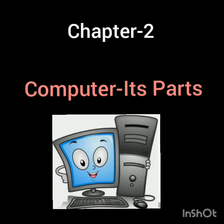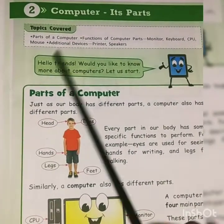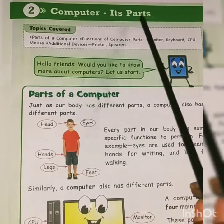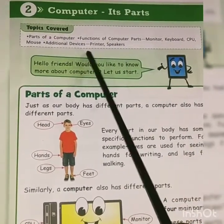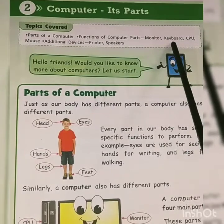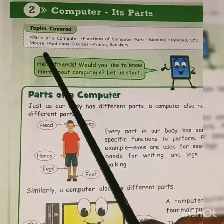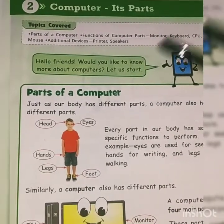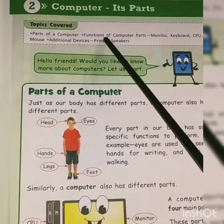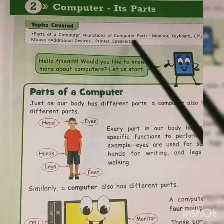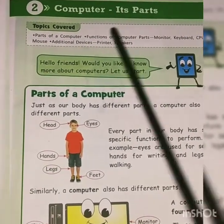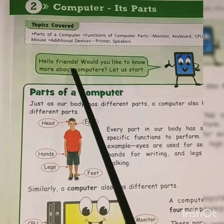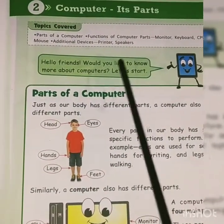Hello class, welcome to the e-learn session. Today we are going to read chapter number two, which is 'Computer and Its Parts.' The parts of a computer include monitor, keyboard, CPU, mouse, speaker, and printer. In this chapter we will discuss the function of the computer and the function of its parts. Let's start.